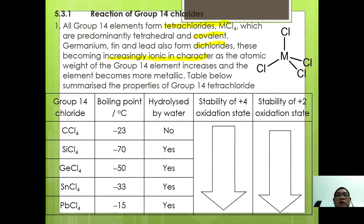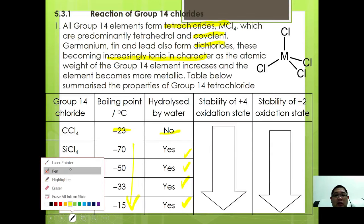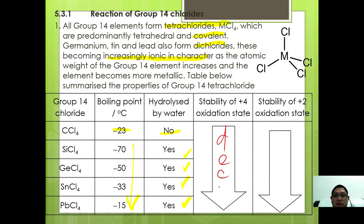This table summarizes Group 14 chlorides. In terms of boiling point, it generally increases down the group. However, CCl4 has exceptionally high boiling point, which I'll explain later. CCl4 cannot undergo hydrolysis with water, but all other Group 14 tetrachlorides can. Generally, stability of the +4 oxidation state is decreasing down the group, whereas +2 is increasing.